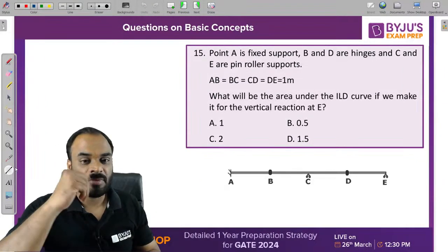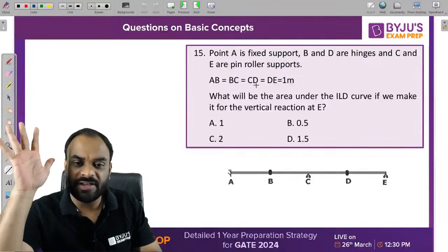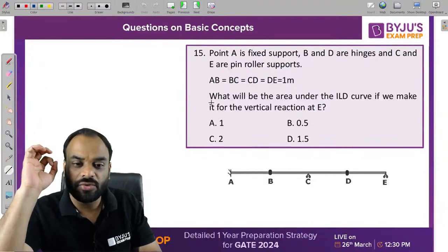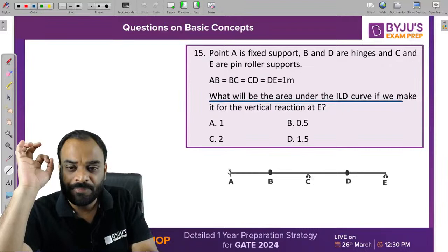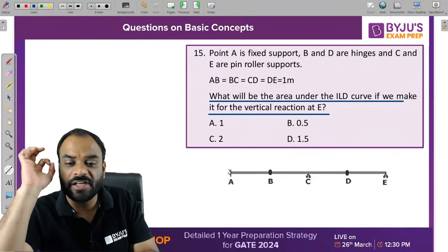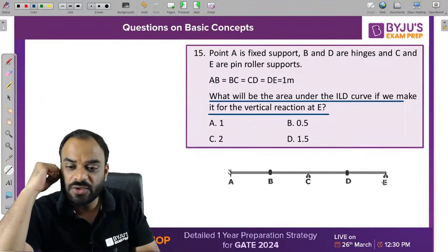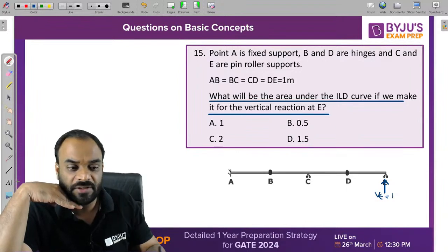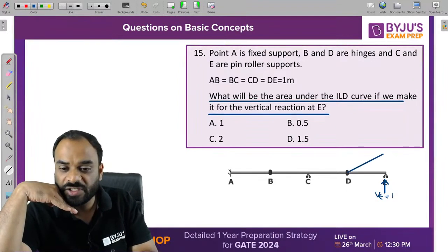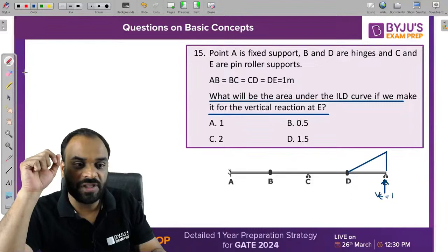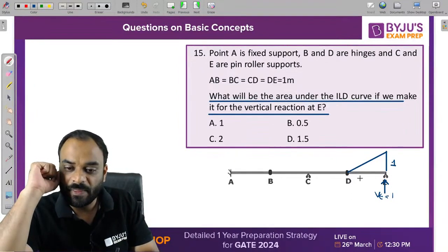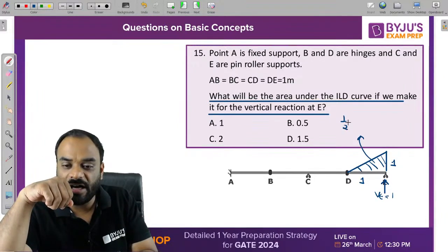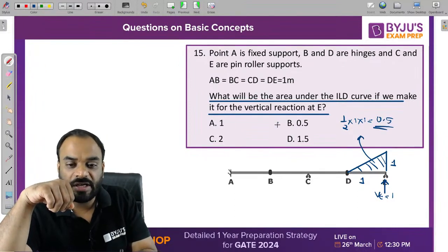Last question: using the same structure, find the area of the ILD curve for vertical reaction at E. Releasing the vertical reaction at E gives a unit displacement. The ordinate at E is 1 and the base is 1 meter. The area equals half into 1 into 1, which equals 0.5. The correct answer is B.